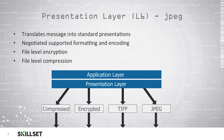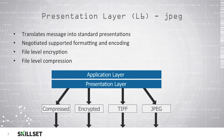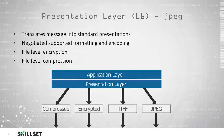Layer 6, or the presentation layer, is concerned with translating data into standard formats such as JPEG, which is a common picture format. It is responsible for negotiating supported formatting and encoding protocols that are compatible with both systems. File-level encryption and file-level compression are both done at the presentation layer. Data from the application layer is forwarded down to the presentation layer where compression, encryption, or conversion to common formats is done before the data is moved down to the session layer.